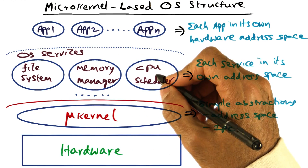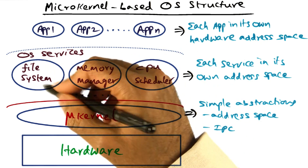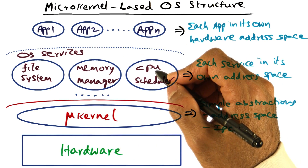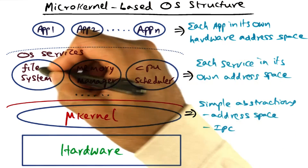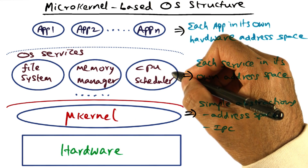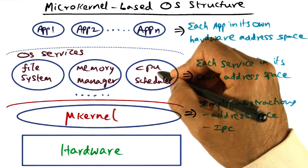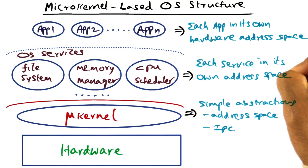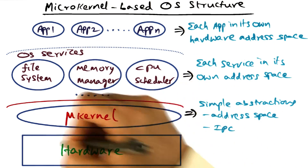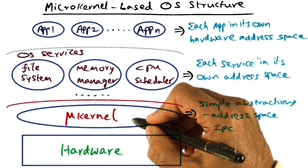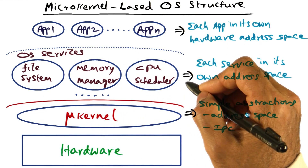The operating system services such as virtual memory management, CPU scheduling, file system, and so on are implemented as servers on top of the microkernel. In other words, these system services execute with the same privilege as the applications themselves. Each of the system services is in its own address space, protected from one another and from the applications, while the microkernel below this red line runs in privileged mode, protected from all applications and system services.